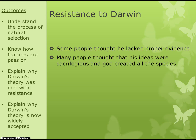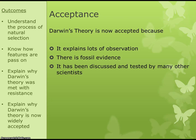Darwin's theory was not universally popular when it first came out. Some people felt he didn't have enough evidence, but most of the criticism came from the religious community, who felt his ideas were sacrilegious — going against the Bible because they believed God created all species. The idea that species had come about over time was seen as being against religion, causing a lot of controversy. However, Darwin's theory is now accepted because it explains many observations, there is fossil evidence, and it has been discussed and tested by many scientists.